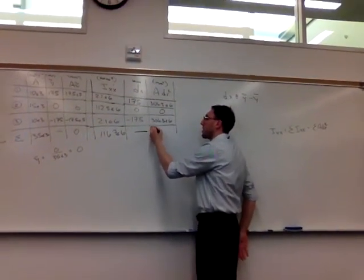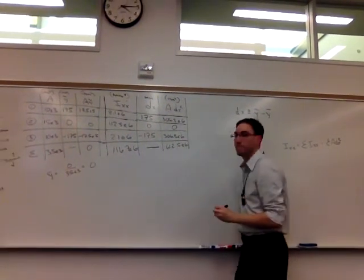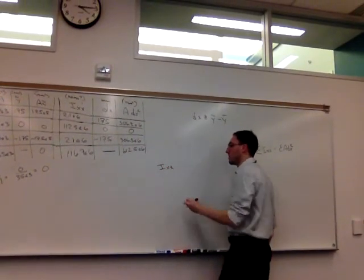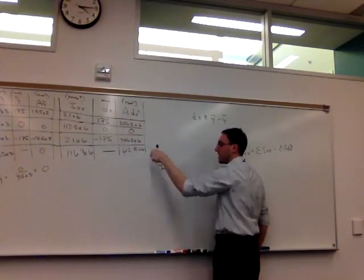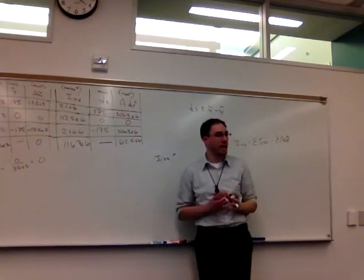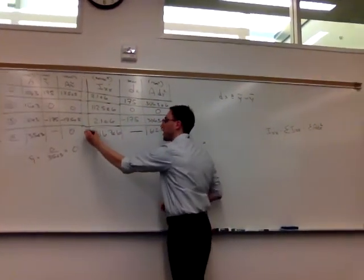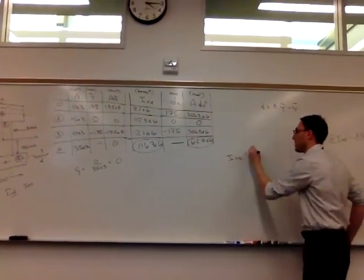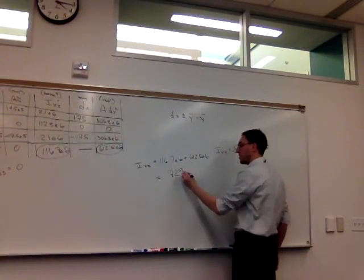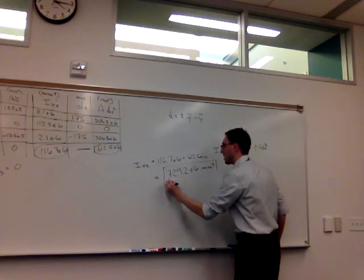Lastly, I can add this together. We get 612.5 times 10 to the sixth. These are with rounding, it was unrounded here, at least in Excel. Last step, I now can get the composite shape's moment of inertia about its own centroidal axis. I just have to take this value here, and add it to this value here. If we add this together, our total is 729.2 times 10 to the sixth millimeters to the fourth power.